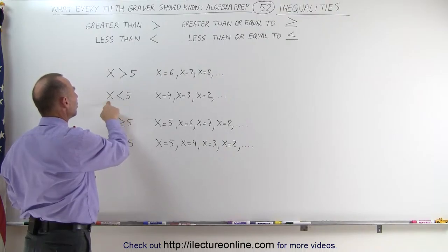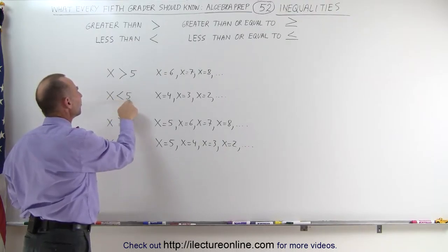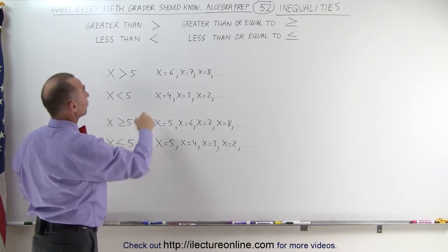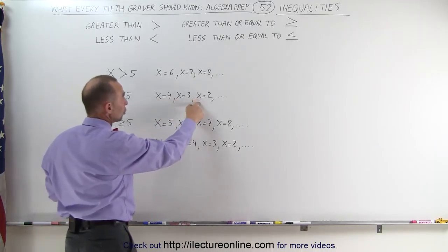If you write it like this the unknown number is less than 5. That means it must be a smaller number. For example 4, 3, 2 and so forth.